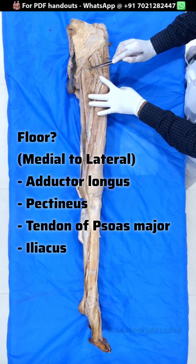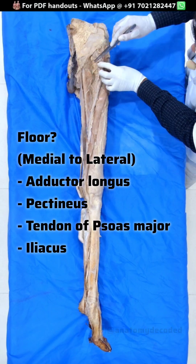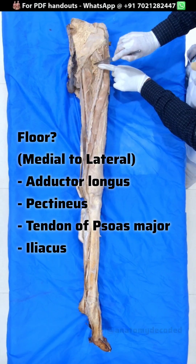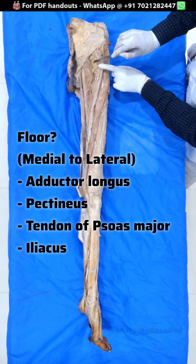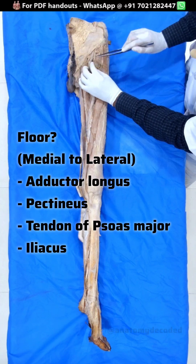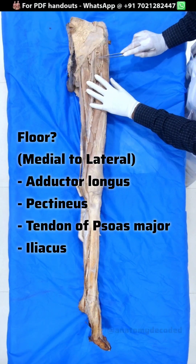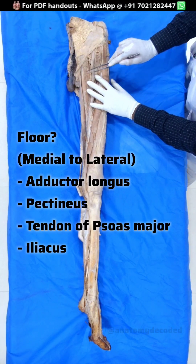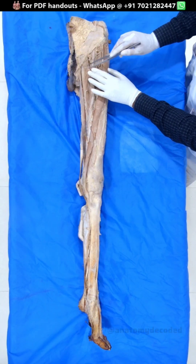The floor of the femoral triangle, from medial to lateral, includes the adductor longus, then the pectineus, then a tendon called the tendon of psoas major, and the lateral-most muscle is the iliacus. These four muscles form the floor of the femoral triangle.